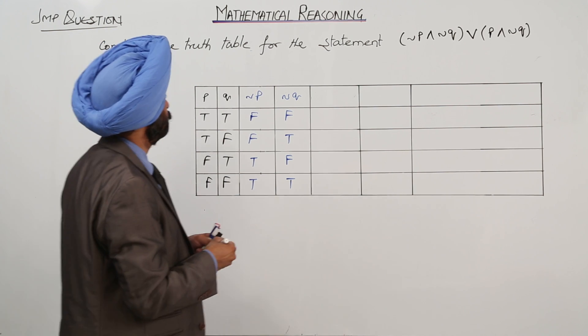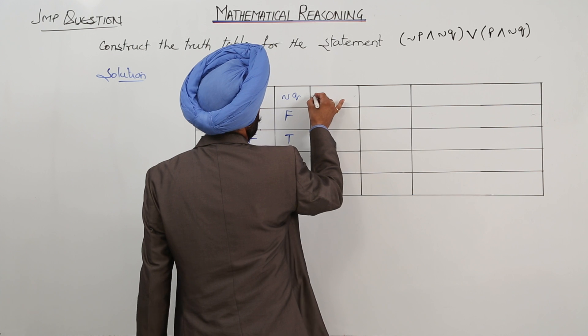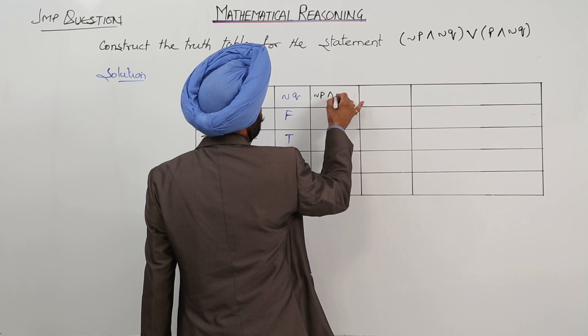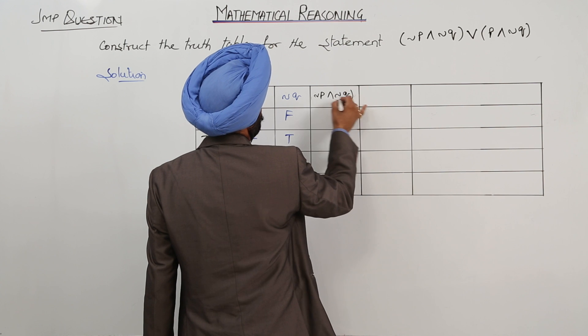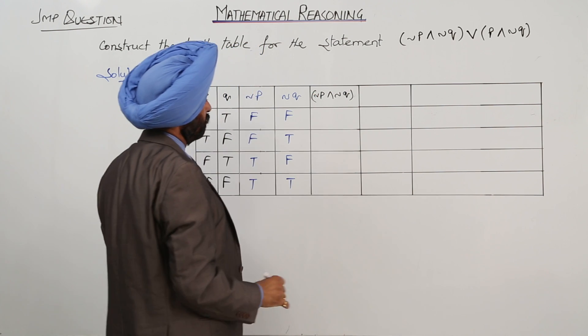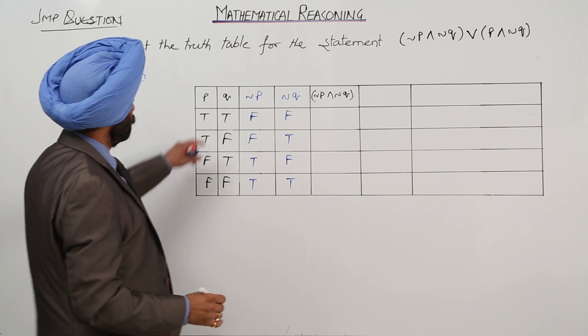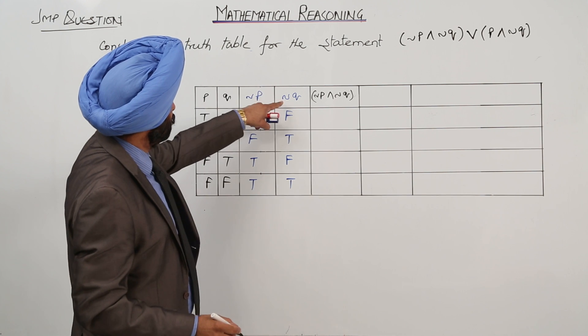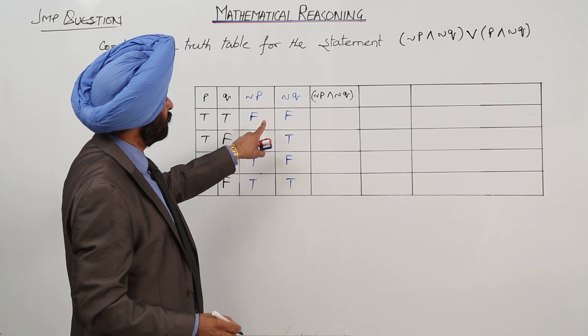Now negation of P and negation of Q. Negation of P, that is this one, and negation of Q is this one, and we have to find and.